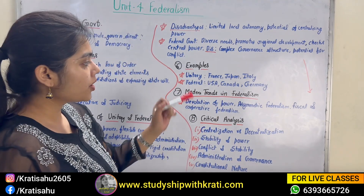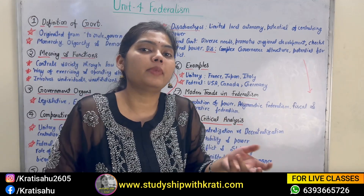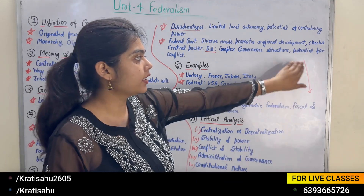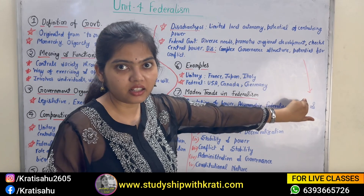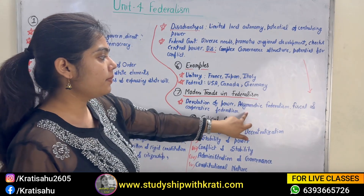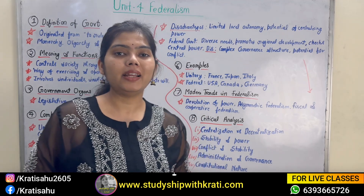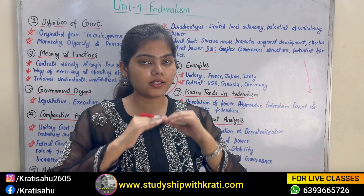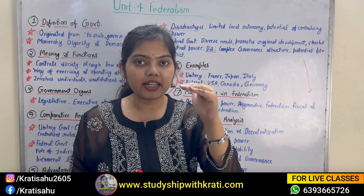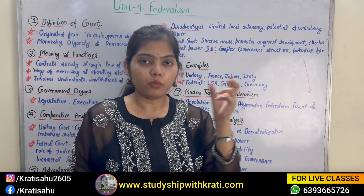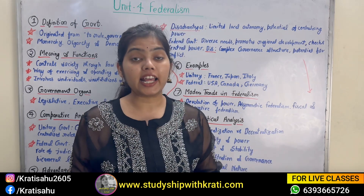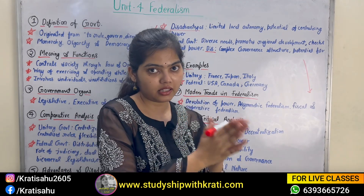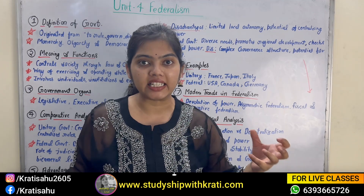Modern changes in federalism — now many new characteristics have been added. Devolution of power is a characteristic of federalism where we talk about distributing power properly down to lower levels. Asymmetric federalism — India follows asymmetric federalism. It is not something where power is equally divided between central and state. In India, the central government is stronger than the state government. Most importantly, power is distributed, but even among states it is not equal — some states may have been given more power or more resources because of their population or other requirements.